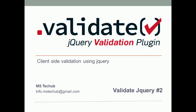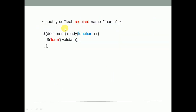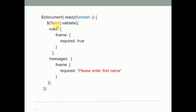Welcome to MS Stack Hub. This is the continuation of the validation series. In our previous video we saw how to validate a field using the required attribute and the validate function. In this video we are going to discuss about the validate function and its properties like rules, messages, and some others.